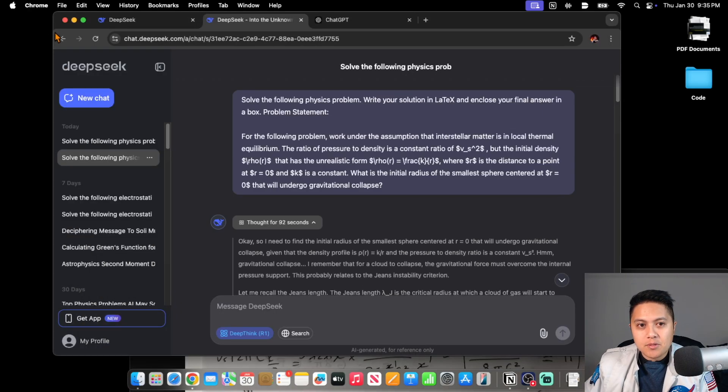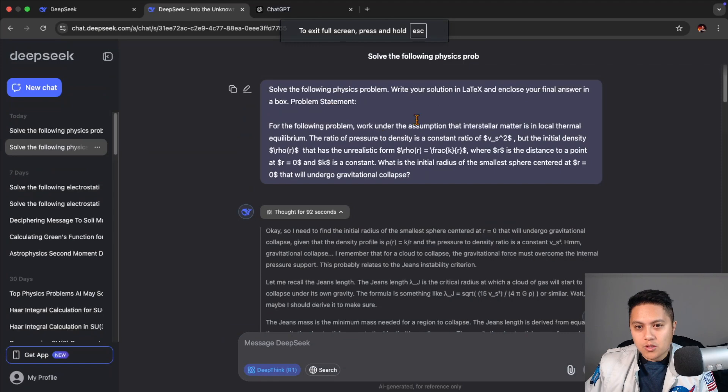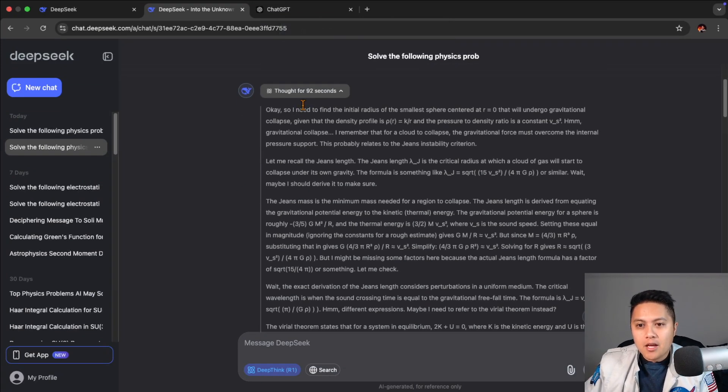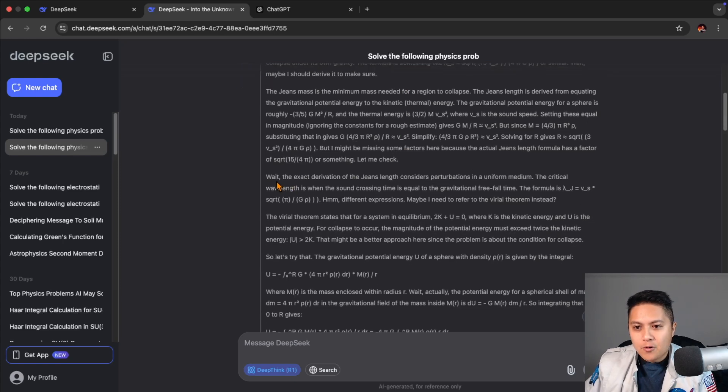So I actually did this in stages. So here is DeepSeek's first attempt to solve the problem. I didn't give it the second part. This was just for the first part of the problem. It thought for about a minute and a half here. And it's really cool to see its chain of thought. I like how it says here, I remembered that for a cloud to collapse, the gravitational force must overcome the internal pressure support. This probably relates to the Jean's instability criterion, which indeed is the case.